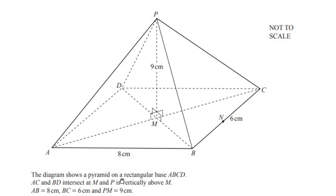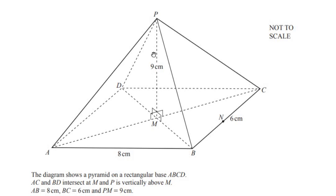The diagram shows a pyramid on a rectangular base ABCD. AC and BD intersect at M — these are the diagonals of the rectangle, intersecting at M, and P is vertically above M, so you can look at it as the height of the pyramid. AB is given as 8 centimeters, BC is given as 6 centimeters, and PM is given as 9 centimeters.